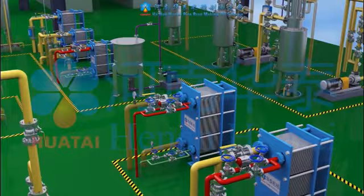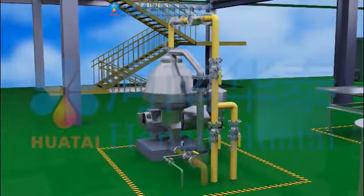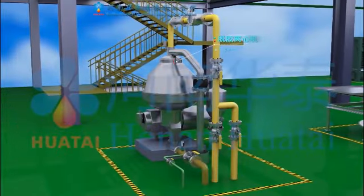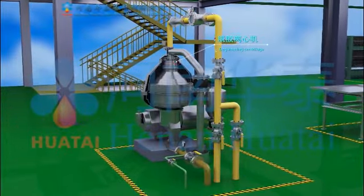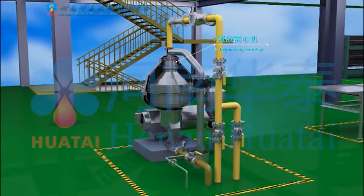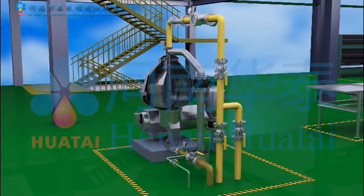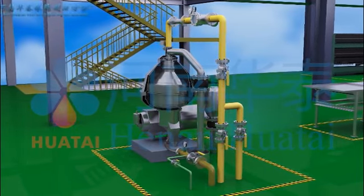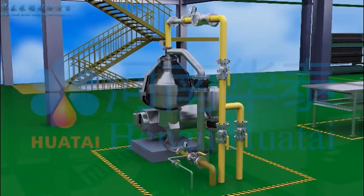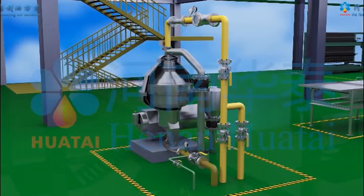After temperature rise, the oil is sent to the degumming centrifuge. By high-speed centrifugal separation, the soap is separated from the alkali refined oil and recycled by the liquid tank on the first floor.